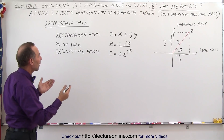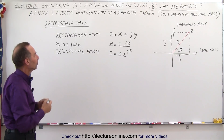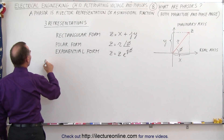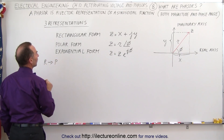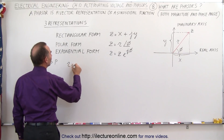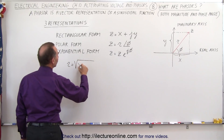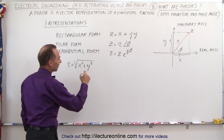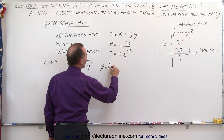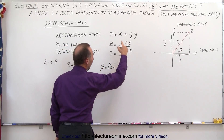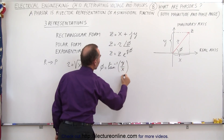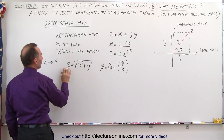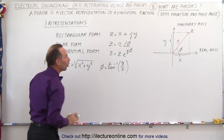Now we'll show how to go from one form to another. Going from rectangular to polar form: the magnitude R equals the square root of x-squared plus y-squared. If you want to find the phase angle phi, that equals the inverse tangent of the y component divided by the x component. This is how we take x and y in rectangular form and convert to R and phi in polar form.